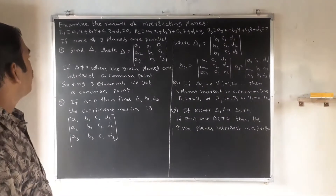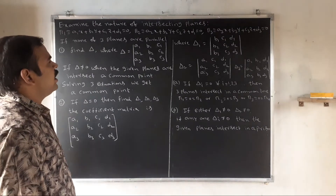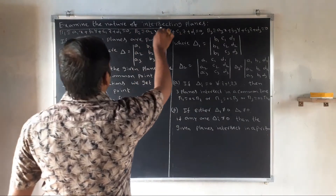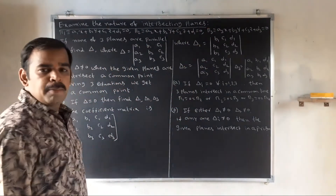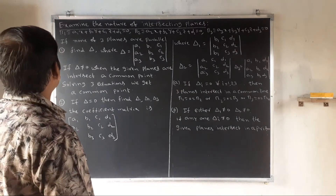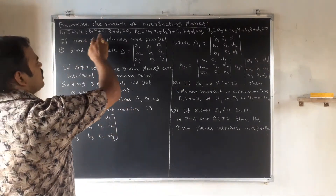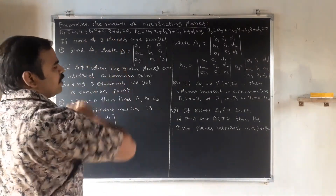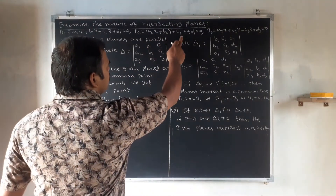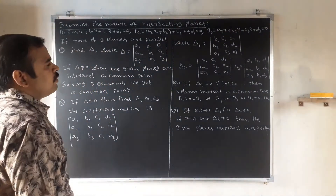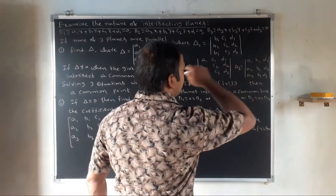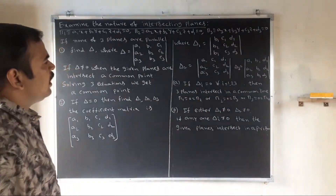Next concept: examine the nature of intersecting planes. We are given three plane equations: φ1 = a1x + b1y + c1z + d1 = 0, φ2 = a2x + b2y + c2z + d2 = 0, φ3 = a3x + b3y + c3z + d3 = 0. We have three plane equations to analyze.